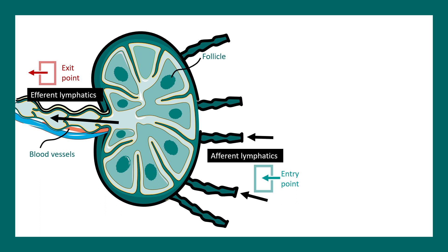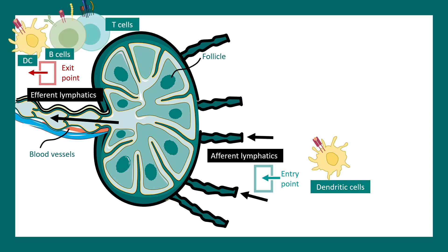Blood vessels can carry several cells like T cells and B cells into the lymph node. Dendritic cells, which can recognize antigens and pathogens in the periphery, can enter the lymph node through the afferent lymphatics. From the efferent lymphatics, activated B cells, T cells, or dendritic cells can circulate out.